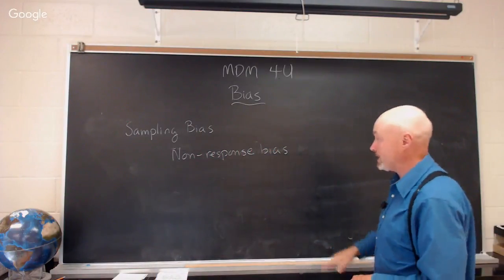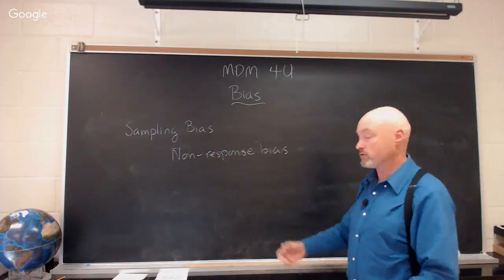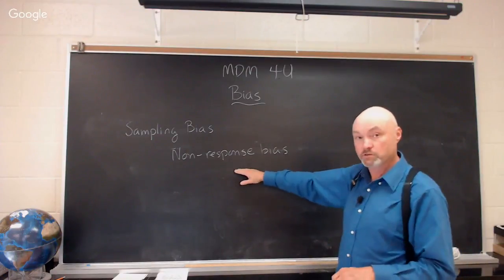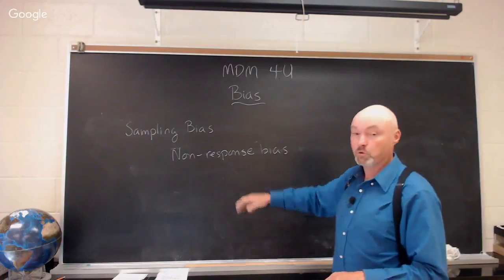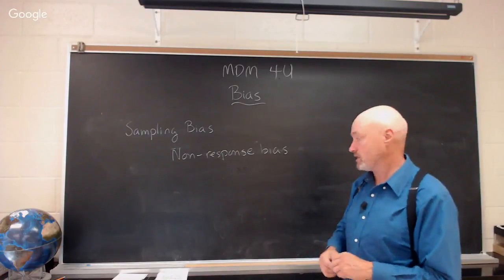In the case of non-response bias, you're doing a survey, for example, and the people who aren't responding to the survey are an important part of the population that you're not sampling.